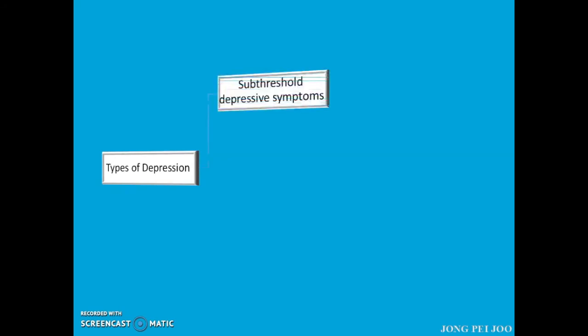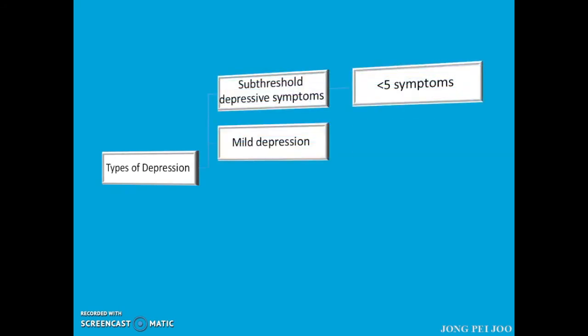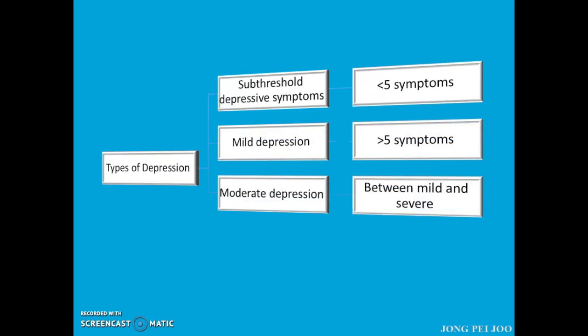The types of depression are classified according to the number of symptoms stated previously occurring simultaneously. It includes sub-threshold depressive symptoms, mild depression, moderate depression, and severe depression.